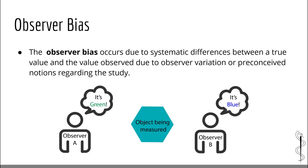Let's start with the observer bias. The observer bias occurs due to systematic differences between a true value and the value observed, due to observer variation or preconceived notions regarding the study. The person making the measurements will incorrectly measure the true value due to preconceived notions. For example, a pathologist looking at kidney biopsies is more likely to diagnose renal cancer in patients known to have a long history of smoking, because smoking is a major risk factor for renal cell cancer. To decrease the risk of observer bias, many research projects employ blinding, where observers do not know who had the exposure and who didn't.